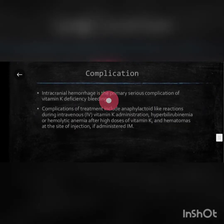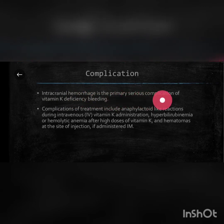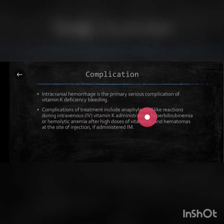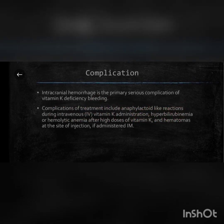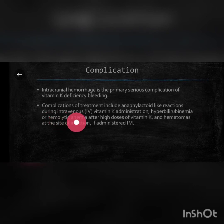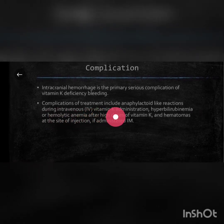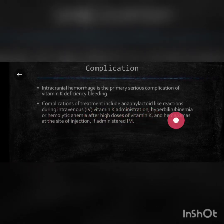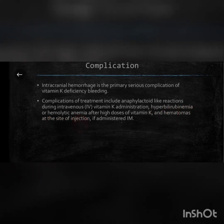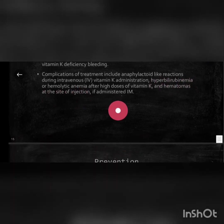Complications: intracranial hemorrhage is the primary serious complication of vitamin K deficiency bleeding. Complications of treatment include anaphylactoid-like reactions during intravenous vitamin K administration, hyperbilirubinemia or hemolytic anemia after high doses of vitamin K, and hematomas at the site of injection if administered intramuscularly.